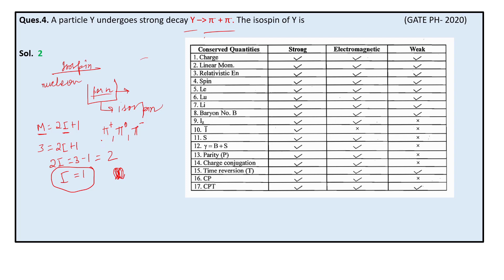The isospin i will be the same for all three pions: π⁺, π⁰, and π⁻. Since we have two pions in the decay, 1 + 1 = 2. In strong interactions, isospin remains conserved, so on the left-hand side we should also have an isospin value of 2. The answer is 2.